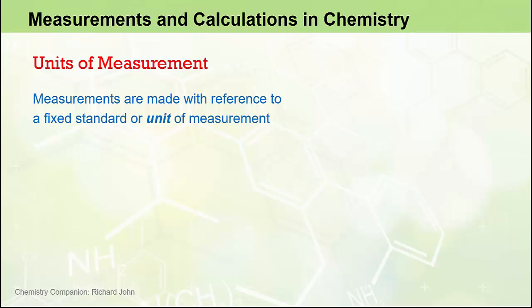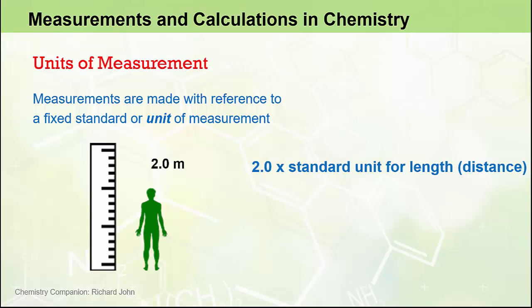Measurements are made with reference to a fixed standard of measurement, or what we call a unit of measurement. So, for example, when we make the claim that somebody is 2 m tall, we are actually saying they are 2 times the standard unit for length or distance, and that is 2 times 1 m, the m being the standard unit for length or distance.